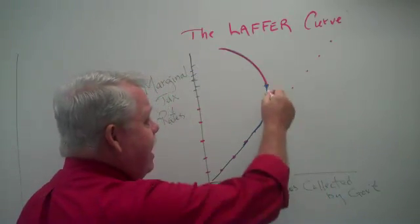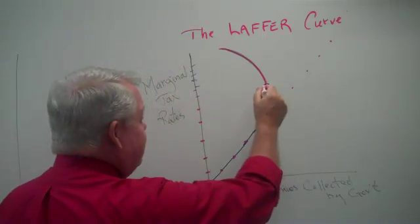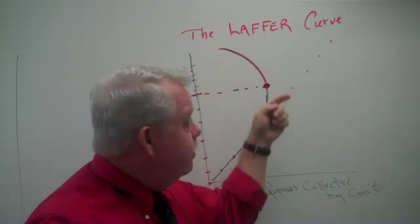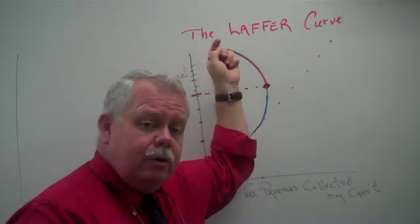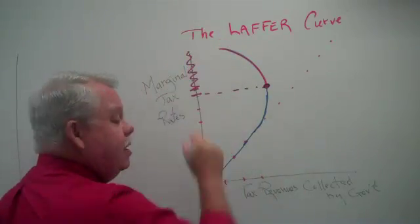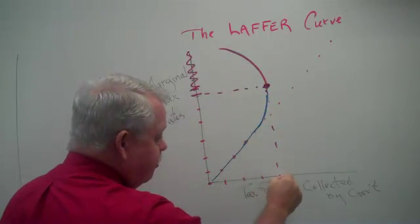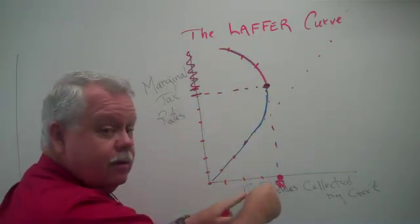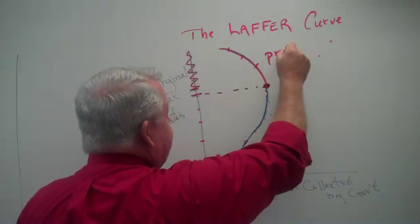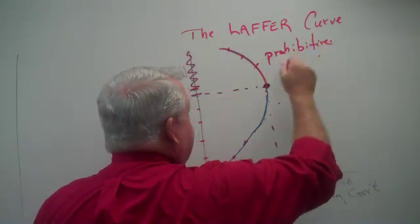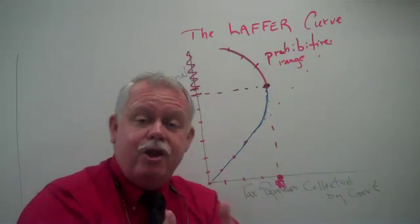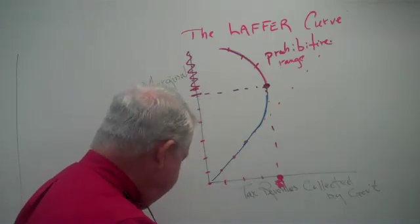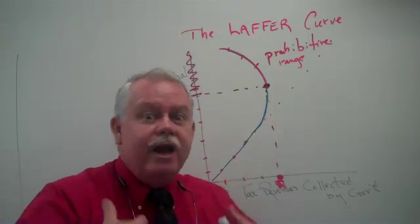So the bottom line is: at some tax rate — I don't know what it is — at some maximum marginal tax rate, any tax rates above that will cause the government to collect fewer dollars in revenue. If your tax rates are above that maximum collection point, raising taxes further means you collect less money. We describe this as the prohibitive range for tax rates. Tax rates up in that range are truly punitive — they're punishing people for working and making extra money, providing a disincentive to work and an incentive to cheat.